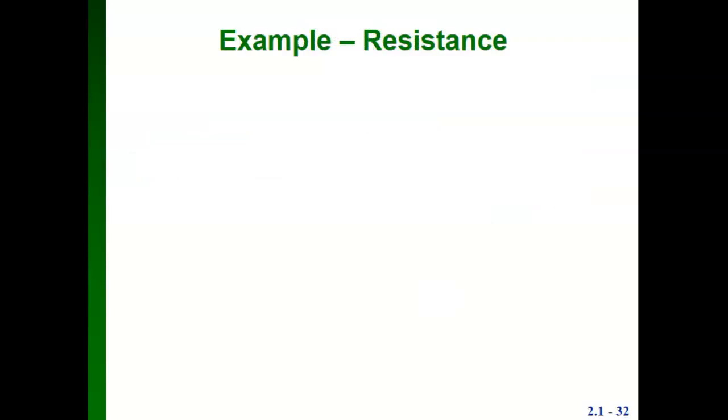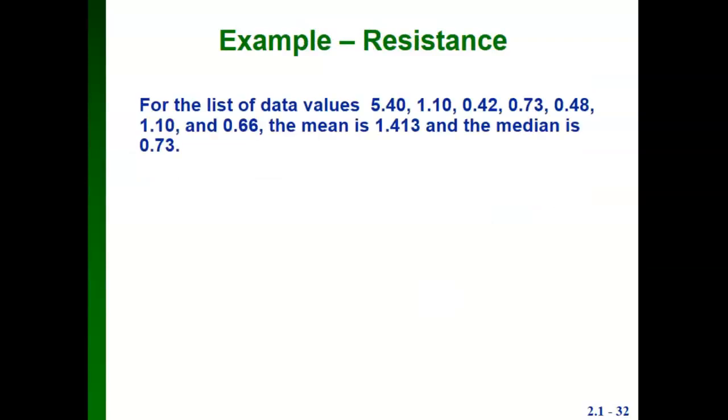Let's look at an example of resistance. If we have a list of data values: 5.40, 1.10, 0.42, 0.73, 0.48, 1.10, and 0.66, the mean of this list is 1.413 and the median is 0.73.